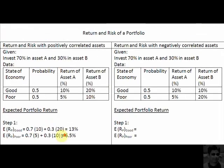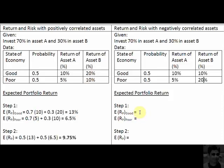Now let's see what happens to the same portfolio if we assume the assets are negatively correlated with each other — meaning that as the return on asset A falls from 10% to 5%, the return on asset B goes up from 10% to 20%. They behave in an opposite fashion, so they are negatively correlated. Let's take the same two steps to find the expected portfolio return once more.